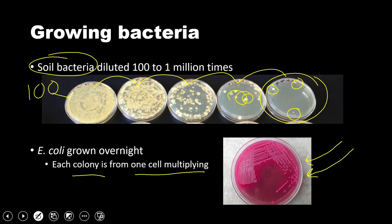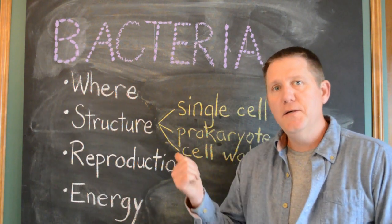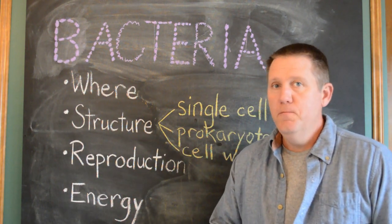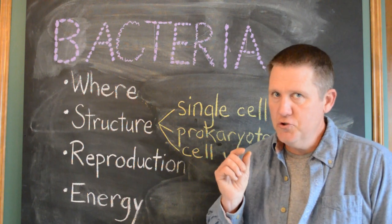In this case, E. coli bacteria have grown up just overnight, so they've been spread out on this plate by wiping them there. And each dot you see is the result of one cell multiplying enough where you can see it with the naked eye. Really astounding growth.